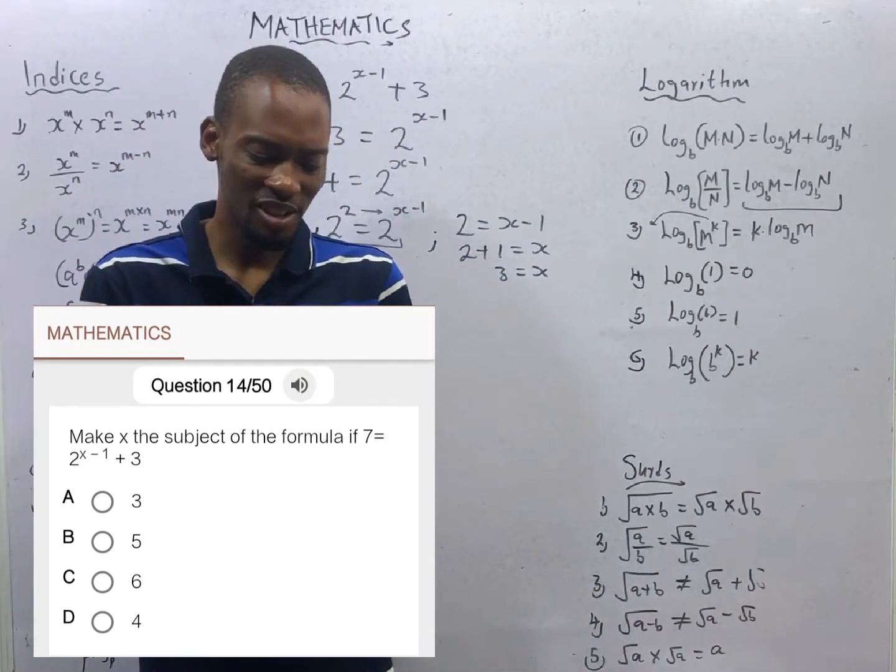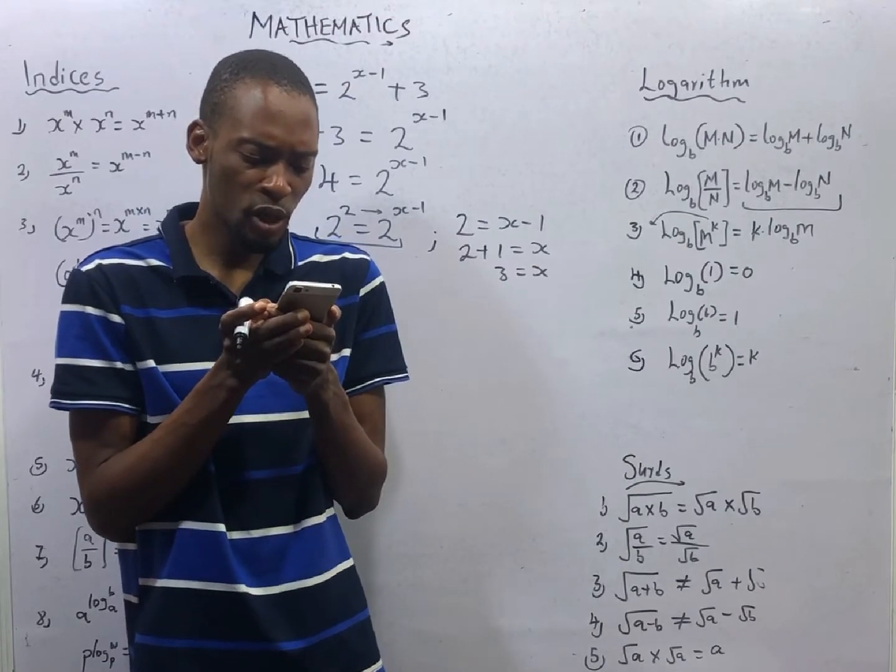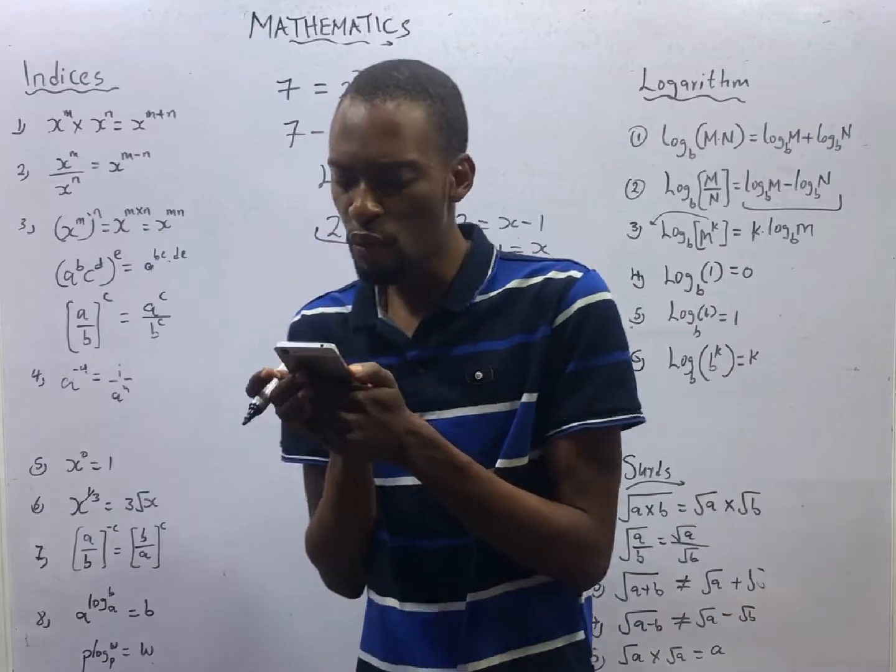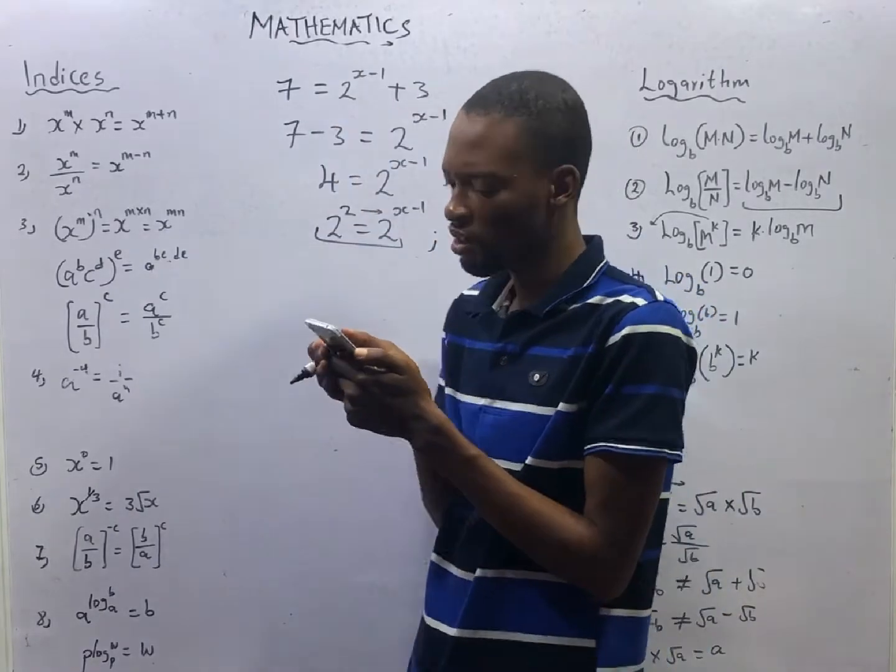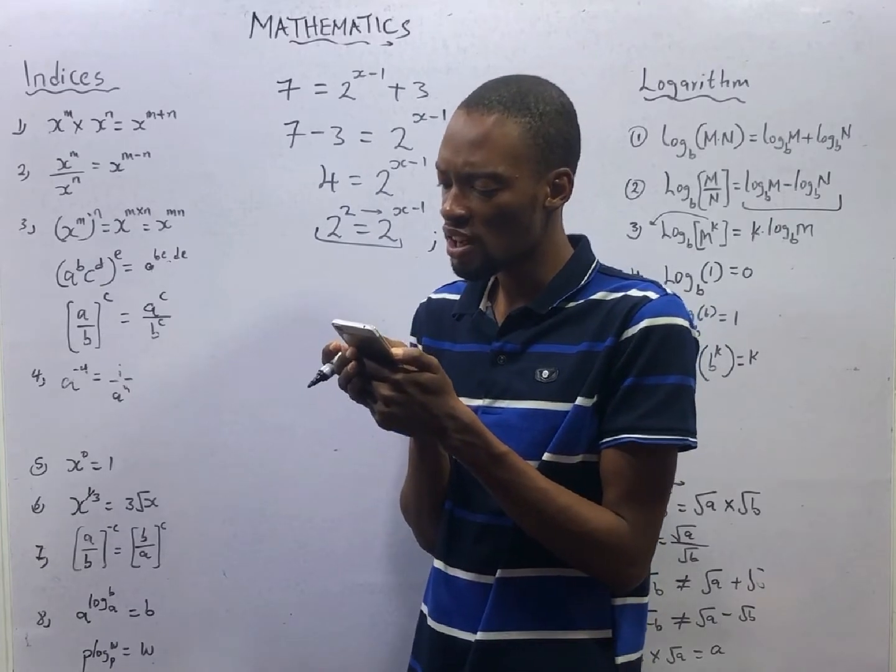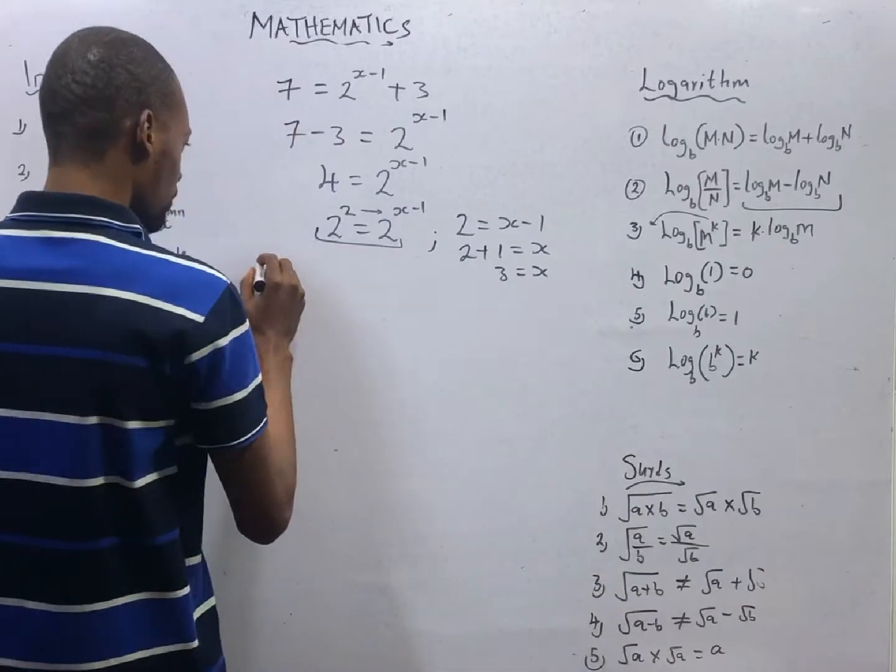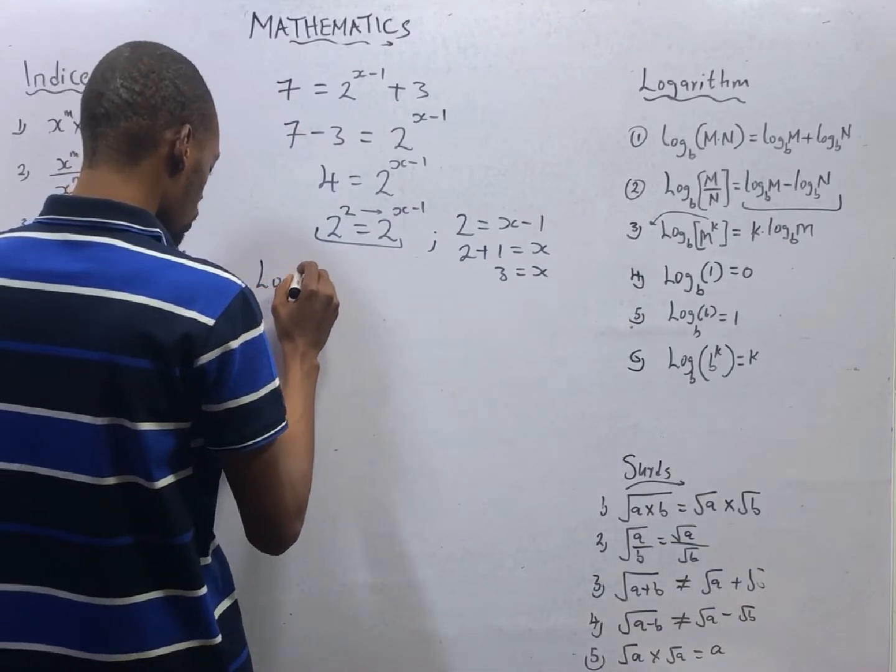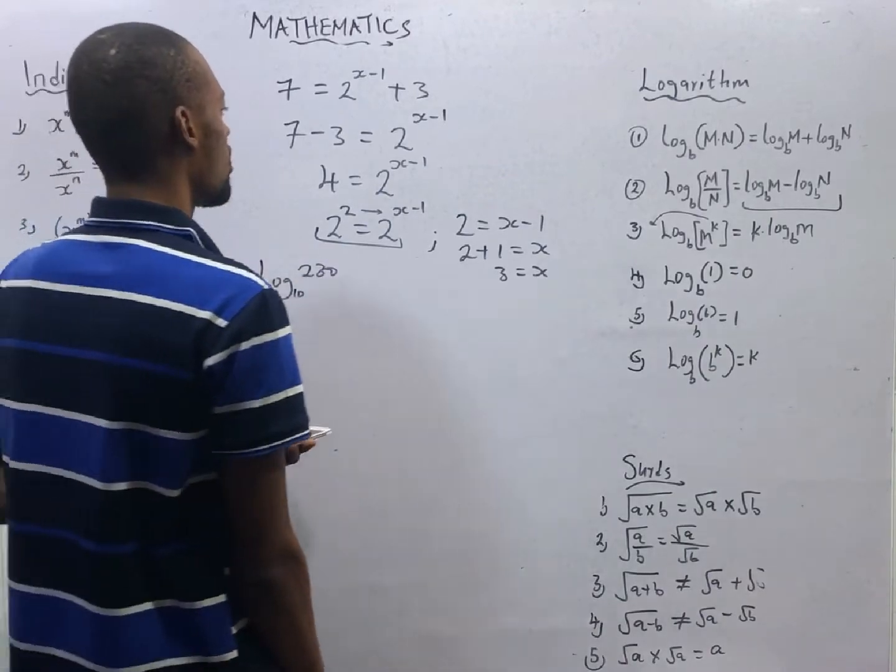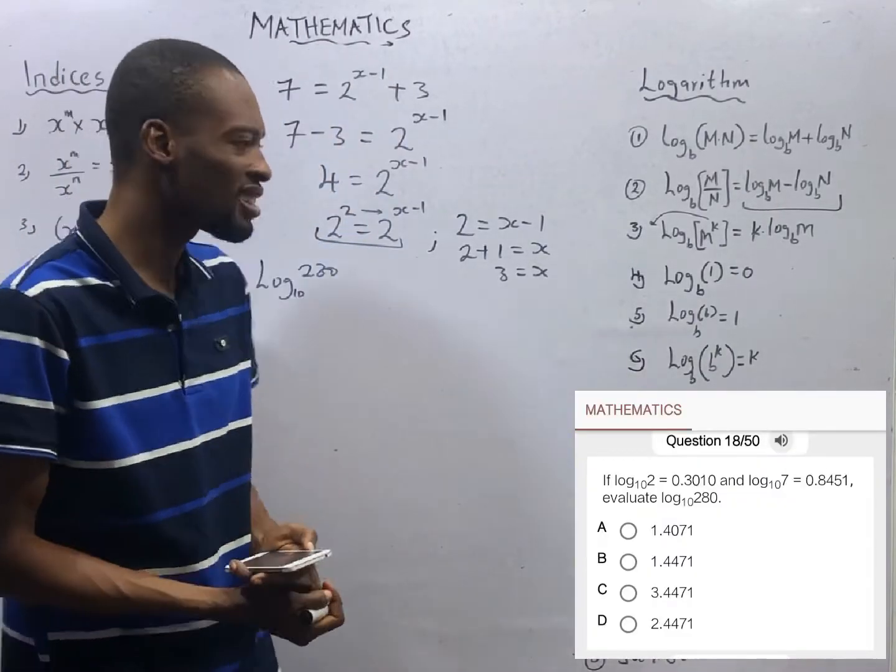And here it says, if log 2 to base 10 is equal to 0.3010, and log 7 to base 10 is equal to 0.8451, evaluate log 280 to base 10. This is the task before us. We will solve questions like this before.